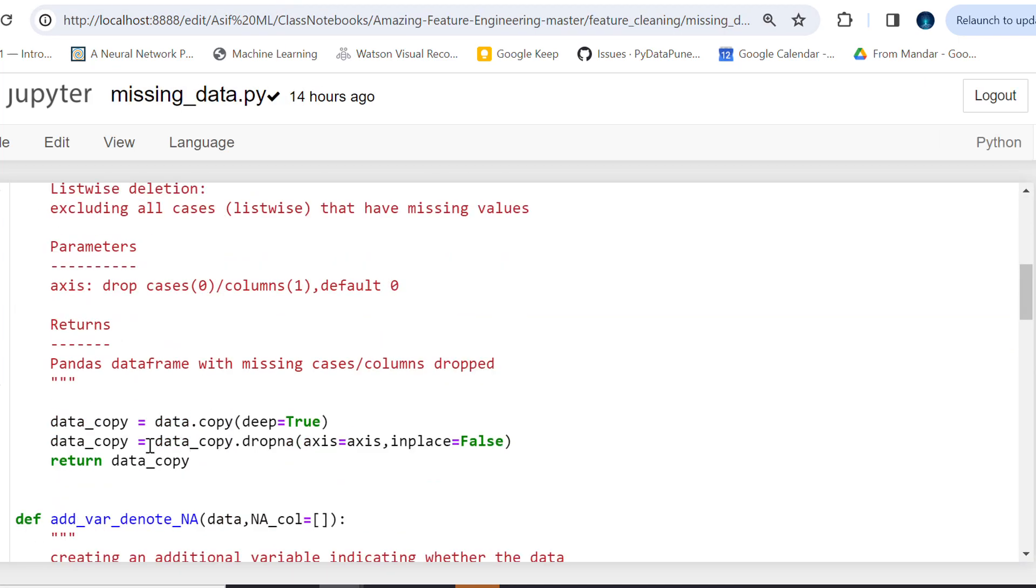I'm creating a copy of the dataset and then I'm using a simple function, dropna, on the same axis. And inplace is false because I don't want to save it back in the original dataset. I want to save it in the data_copy. Print that data_copy, return that, and print that.